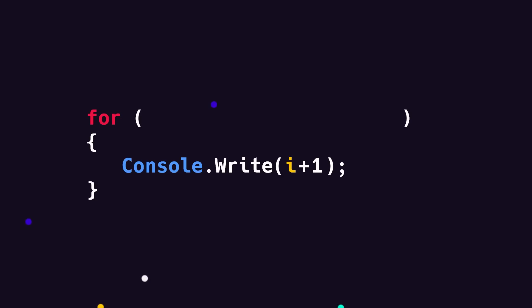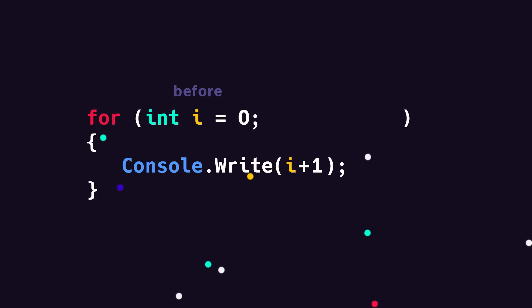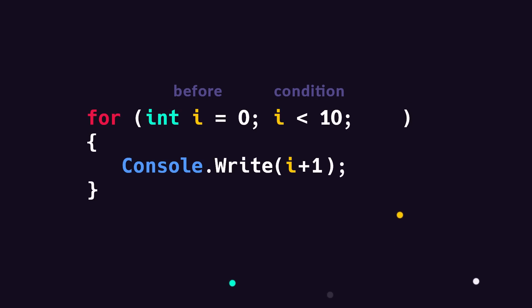Of course, we still need some code that tells it how many times it should repeat. We do this inside the parentheses. The syntax for this is a bit weird, but don't worry, you will get the hang of it. First, we write what should happen before the loop starts. Here we write 'int i equals zero' and then a semicolon — in other words, we create the i variable and set it equal to zero. We then write the condition that needs to be met for our loop to keep running. In this case, we want the loop to run as long as i is less than ten, and again we end this with a semicolon.